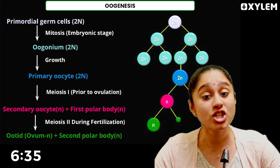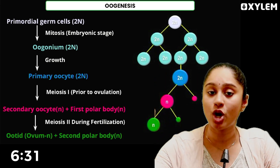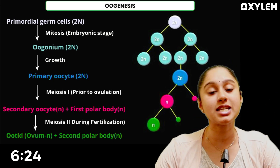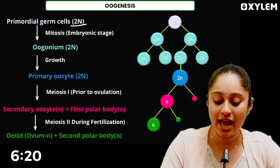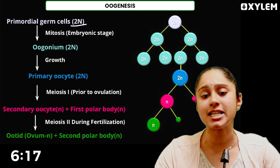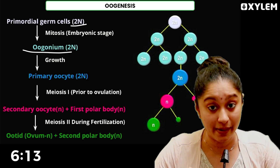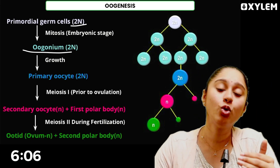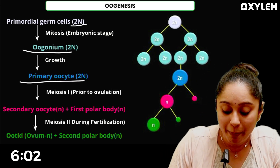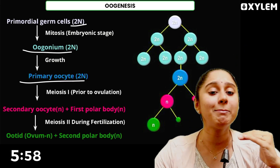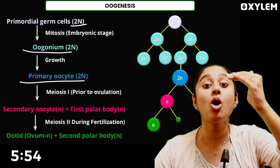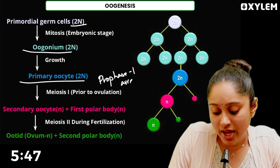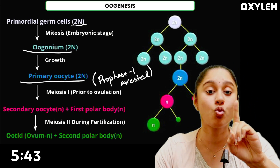Coming to Oogenesis in females — it starts off in the embryonic stage itself, whereas in males, the process starts at puberty. In Oogenesis, first, primordial germ cells — which are diploid, 2N — undergo mitosis in the embryonic stage to form oogonia. The primary oocyte then gets arrested in prophase 1 of meiosis 1.